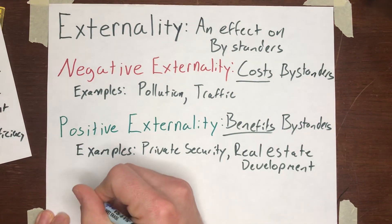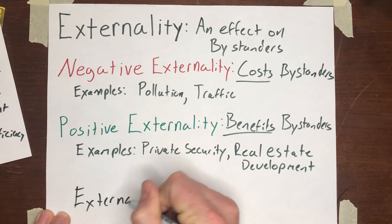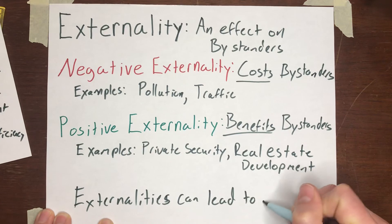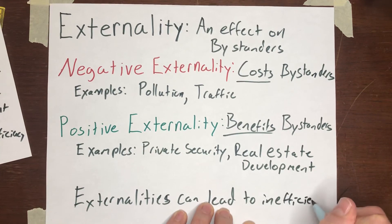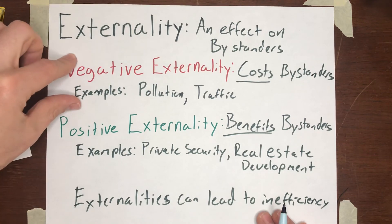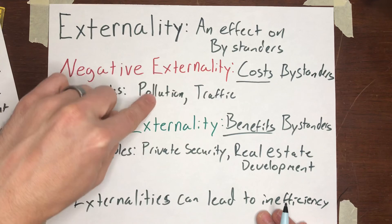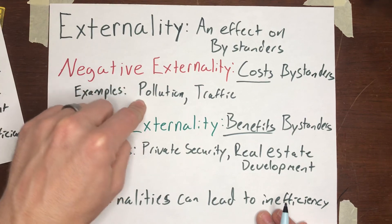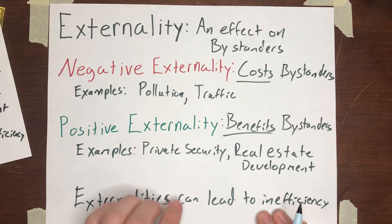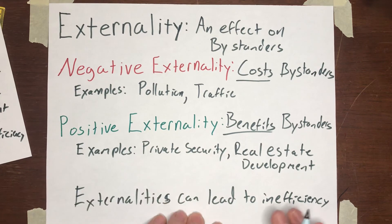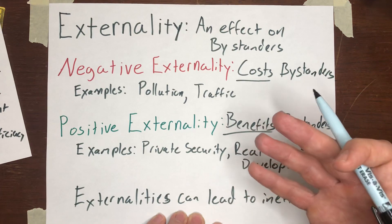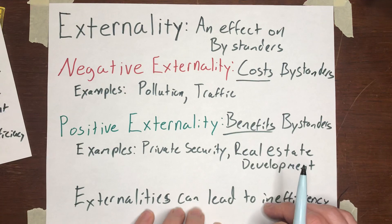Now here's the issue: externalities can lead to inefficiency. I'll show you with graphs in the next video, but when there's a negative externality, if you're not taking into account the cost you're imposing on other people, you might produce too much of that thing. With a positive externality, if you're not taking into consideration the benefits you're conferring on other people, you may produce too little. That means the market is inefficient — we haven't reached the point where all of the available gains from trade have been realized. We'll talk about that in the next video.